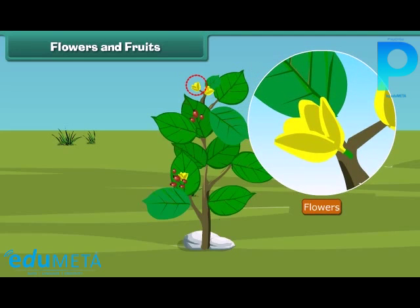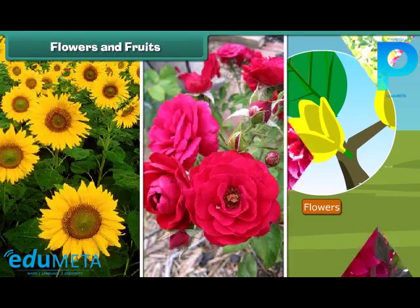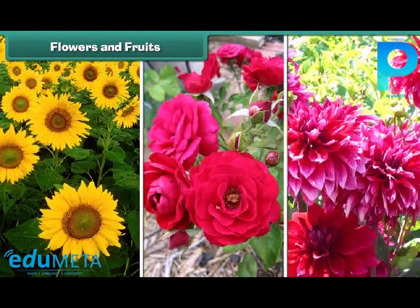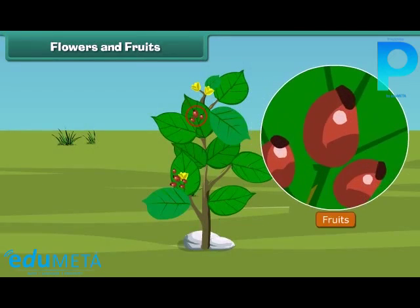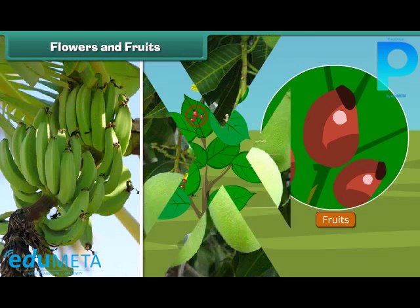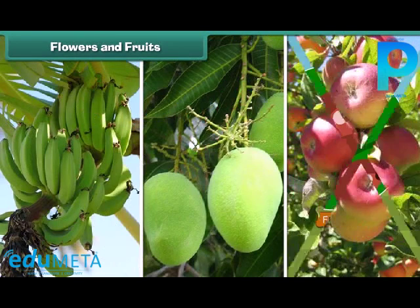Flowers are of different colors and types like sunflower, rose, and dahlia, and so on. I know that most of you also like fruits. Fruit is the juicy part of the plant. Fruits come in different shapes, sizes, and colors like banana, mango, apple, and oranges.